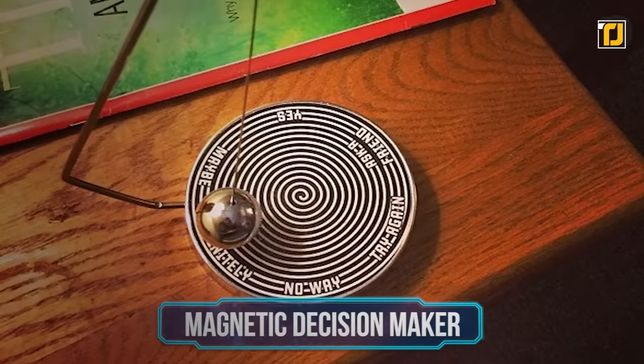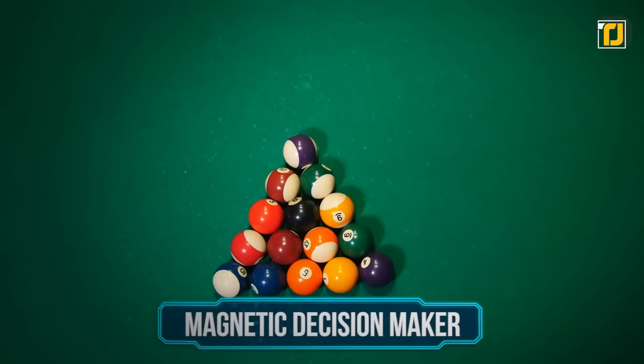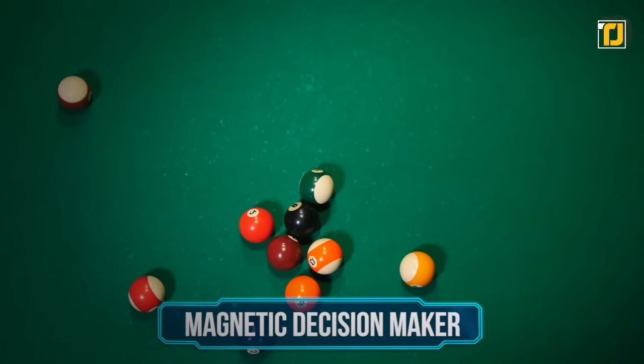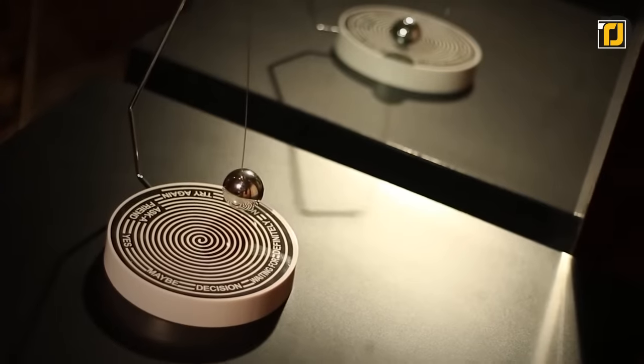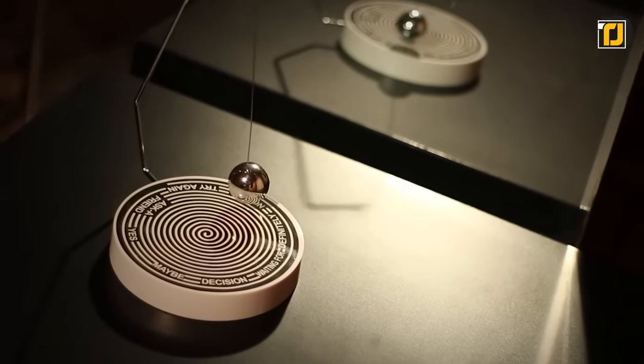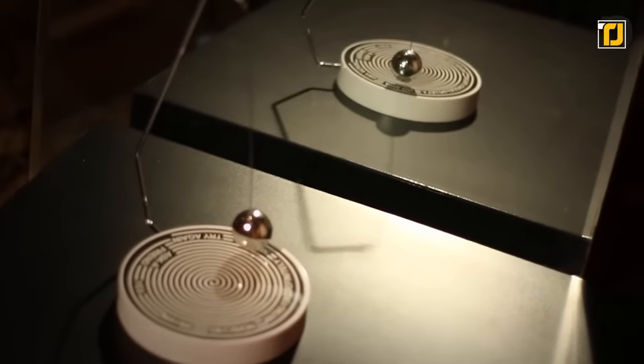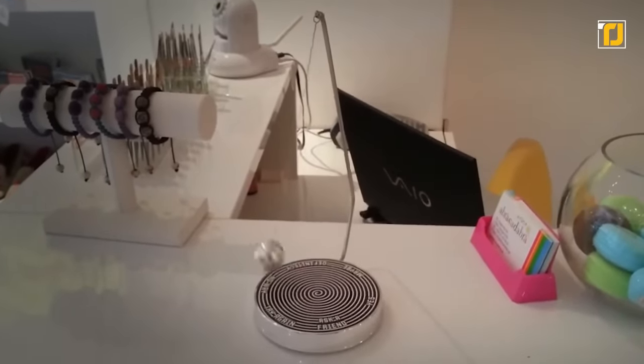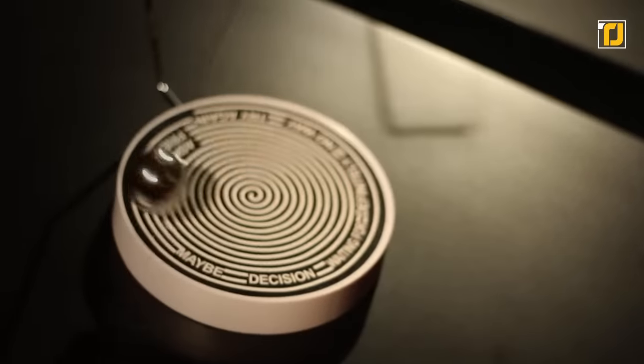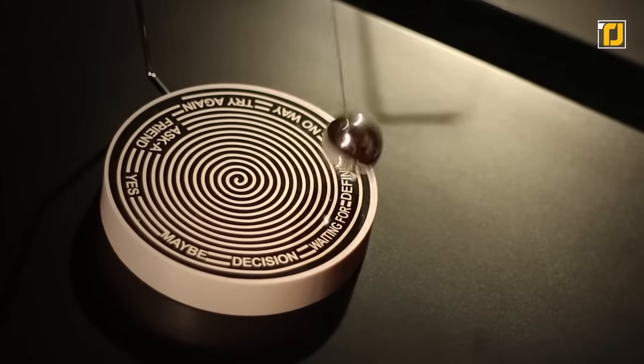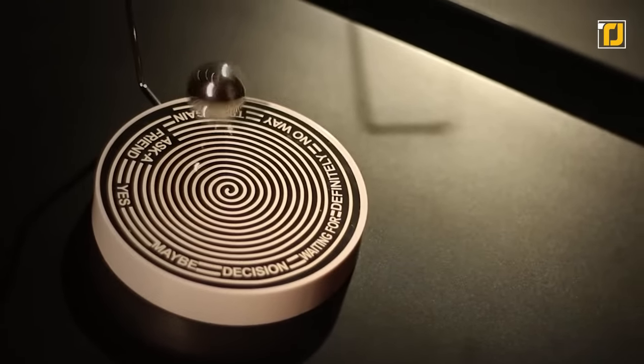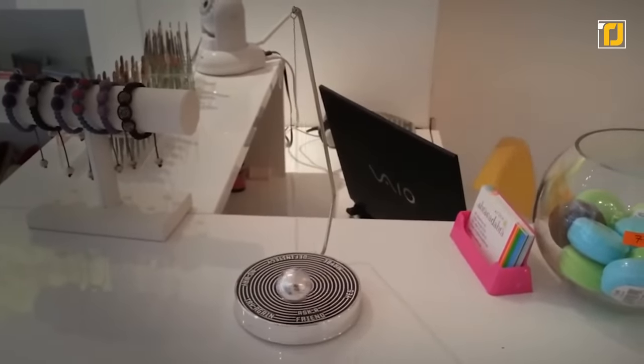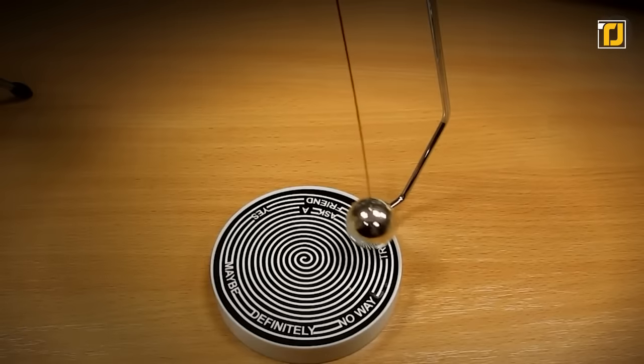Number 9: Magnetic Decision Maker. The eight ball decision maker is out of the game. There's a better and much cooler version of it. With just a ball hanging from a string, you can decide if you should do that pending assignment today or later. Just move the little ball and it'll stop above an answer, which include maybe, definitely, no way, try again, and ask a friend. The best part is, you'll never have to worry about breaking it like an eight ball since it's literally made of steel.